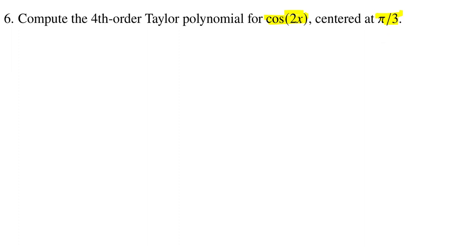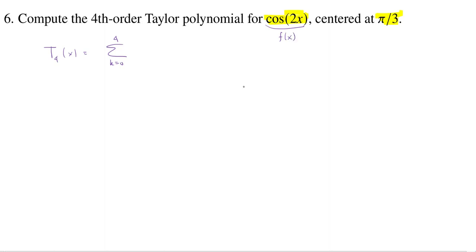So we better write down what this is going to look like. Our fourth order Taylor polynomial is going to be a sum — a polynomial. The k-th term, going from 0 to 4, is the k-th derivative of f evaluated at the center pi over 3, divided by k factorial, times the k-th power of the difference between x and pi over 3.